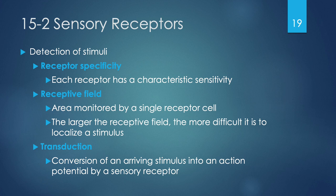Transduction is the process by which a sensory receptor detects an arriving stimulus and converts it into an action potential. If an action potential is not generated — because the graded potential doesn't reach threshold — there will be absolutely no response whatsoever, no awareness at any level, conscious or unconscious, that any sensation has occurred.